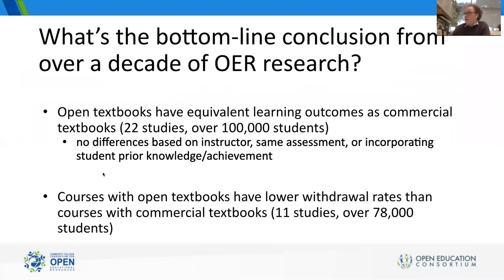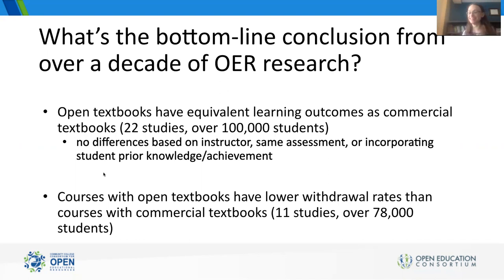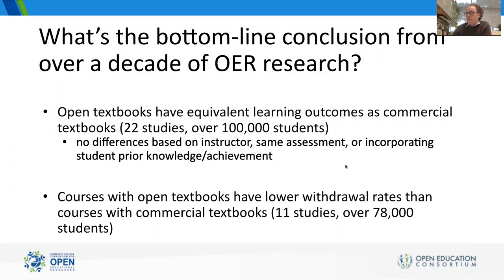Half the studies in the withdrawal rate analysis hadn't published their withdrawal rate data — Virginia reached out to those authors and requested it. There was no difference between those who published versus those who didn't, making it less likely that the results reflected publication bias. John Hilton highlighted this study at Open Ed 2018 as the one to show administrators demonstrating what OER does. Nathan notes it's a really impressive achievement that Virginia contacted all those researchers and gathered additional data.